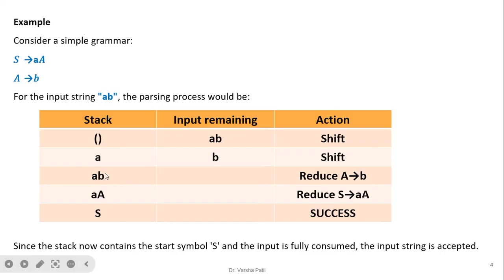Now the stack contains 'a b' with 'b' at the top. We see that 'b' matches the right-hand side of the rule A → b, so we perform a reduce operation: 'b' is replaced by 'A'. Now the stack contains 'a A', which matches the right-hand side of S → a A. We perform another reduce operation, replacing 'a A' with 'S'. The stack now contains only the start symbol S, meaning the string 'ab' is accepted.